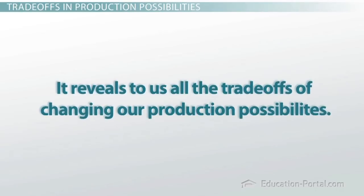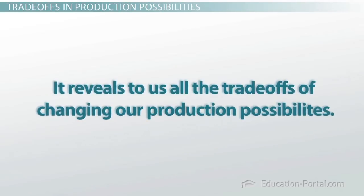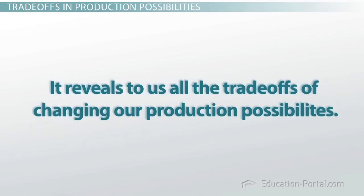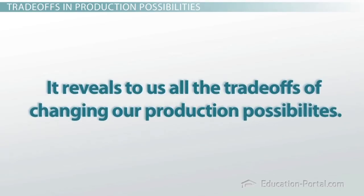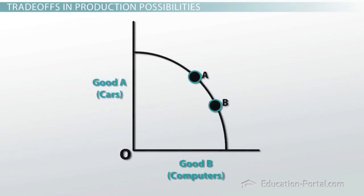Because it reveals to us all the trade-offs of changing our production possibilities. We can pick any two points on a production possibility curve and explain the trade-offs or the opportunity cost of producing different combinations of these two goods.